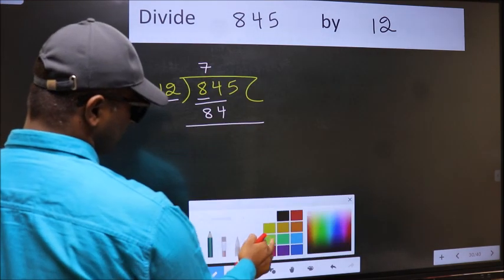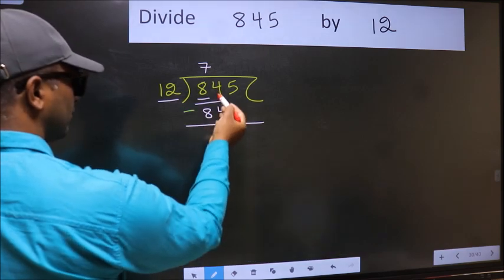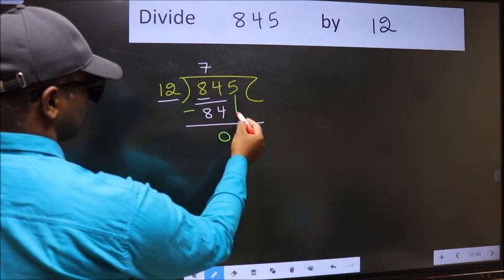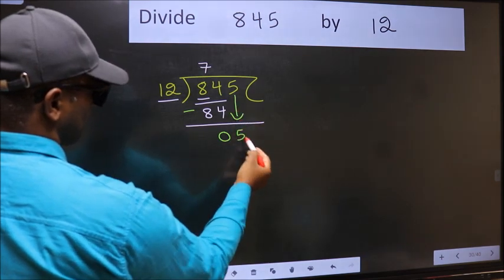Now you should subtract. 84 minus 84 is 0. After this, bring down the beside number. So 5 down.